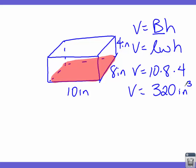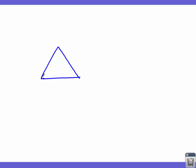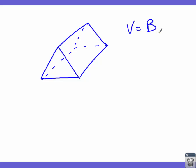Now let's talk about a triangular prism. A triangular prism has two bases that are triangles — we always name a prism by its base. It's typically thought of as a tent shape. Here is a triangular prism with dotted lines added. The volume formula is still volume equals capital B times H, but this time since our base is a triangle, we use the triangle area formula. Notice the prism is not sitting on its base.